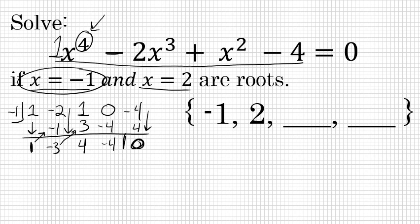Now, this means that if I would divide x to the fourth minus 2x to the third plus x squared minus 4 by negative 1, I would get 1x to the third minus 3x squared plus 4x minus 4. It's not super important to write that polynomial out here because the next step is going to be to take those coefficients and divide by the other root that you were given.